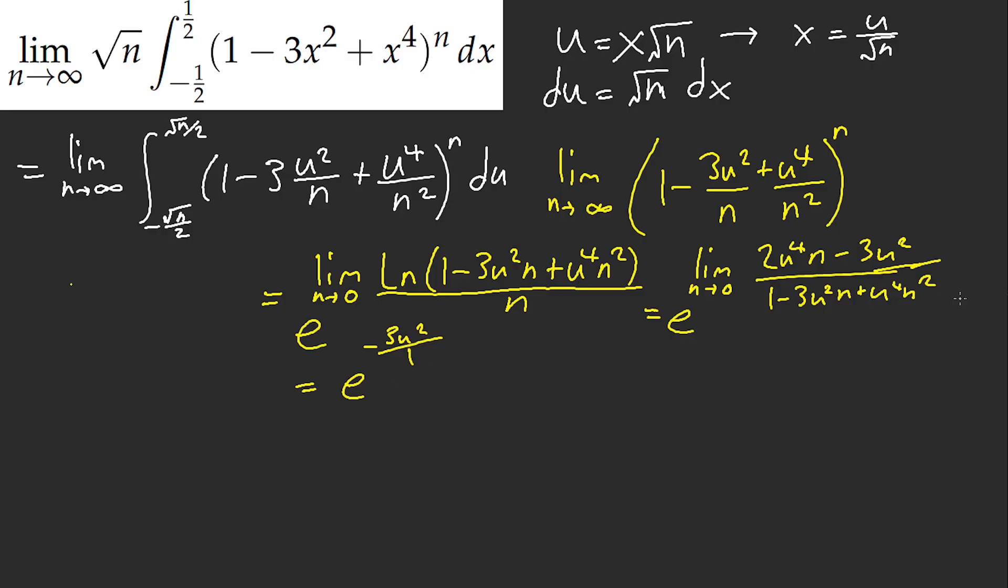That's literally it. So what we have here is now we are left off with negative infinity to infinity e to the negative 3u squared du.